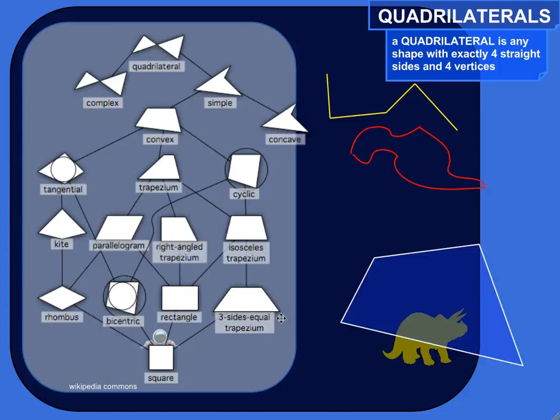Okay, so quadrilaterals. What is a quadrilateral? A quadrilateral is any shape with exactly four straight sides and four vertices.